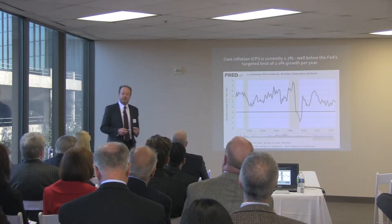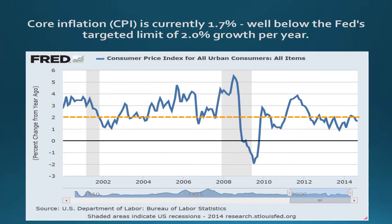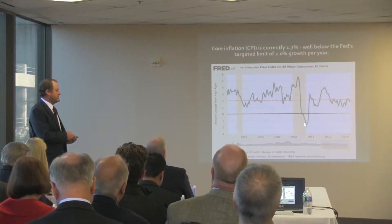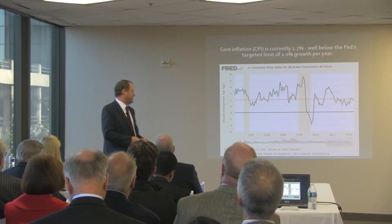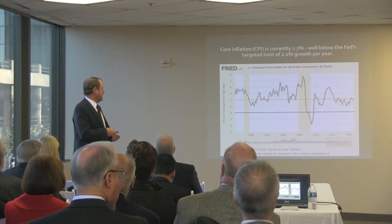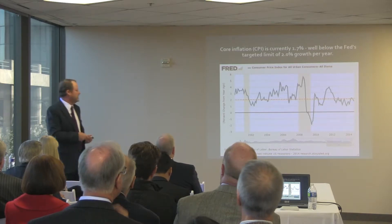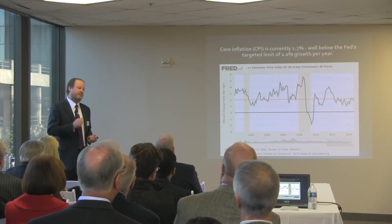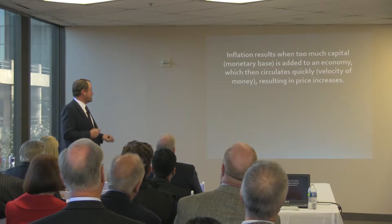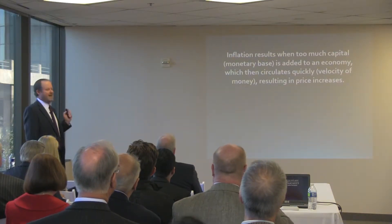Core inflation is currently about 1.7 percent; the Fed's target is two percent. Two to two-and-a-half percent is considered normal historical inflation, and we're trending below that. There was even a period coming out of the recession where deflation was a concern — deflation is not good. Comparatively, looking back to 2000, we're pretty low right now, and I attribute a lot of this to very low energy costs, which have really collapsed.